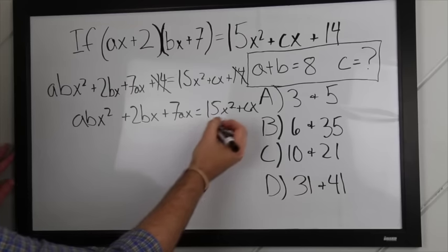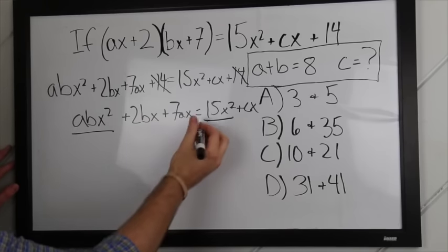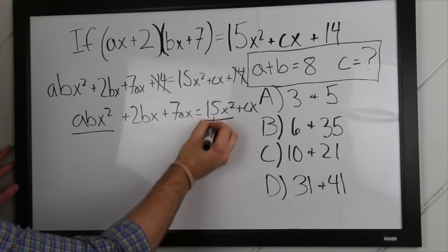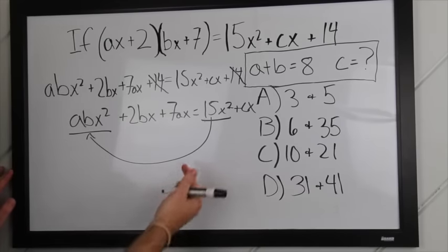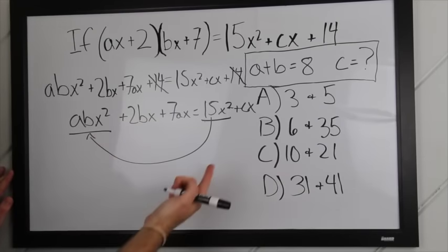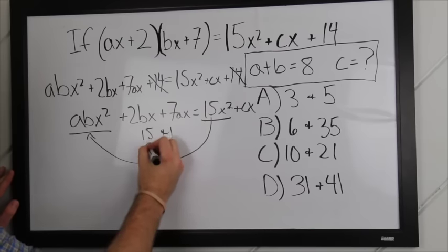Now, we can see that we have one x squared term on this side, one x squared term on this side. So, 15 has to equal ab. So, a and b have to either be, they can be 15 and 1, or 5 and 3.